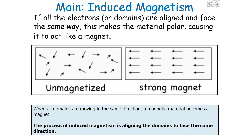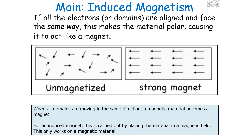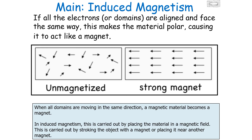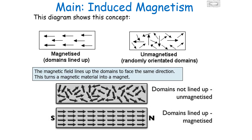When all the domains are moving in the same direction, that makes a magnetic material become a magnet. The process of induced magnetism is therefore aligning all of these domains to face the same direction. For an electromagnet, this is carried out by placing an electrical current through the material. For an induced magnet, this is carried out by placing the material in the magnetic field of another magnet. This will only work with a magnetic material, because only magnetic materials have domains. We can achieve induced magnetism by either placing the material near another permanent magnet, or stroking it with the magnet, as shown in this diagram.